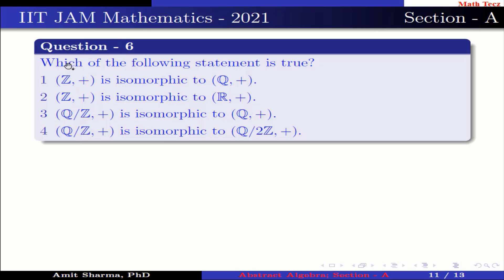Question number 6: Which of the following statements is true? Option 1: Z under addition is isomorphic to Q under addition. Option 2: Z under addition is isomorphic to R under addition. Option 3: Q/Z under addition is isomorphic to Q under addition. Option 4: Q/Z under addition is isomorphic to Q/2Z under addition.